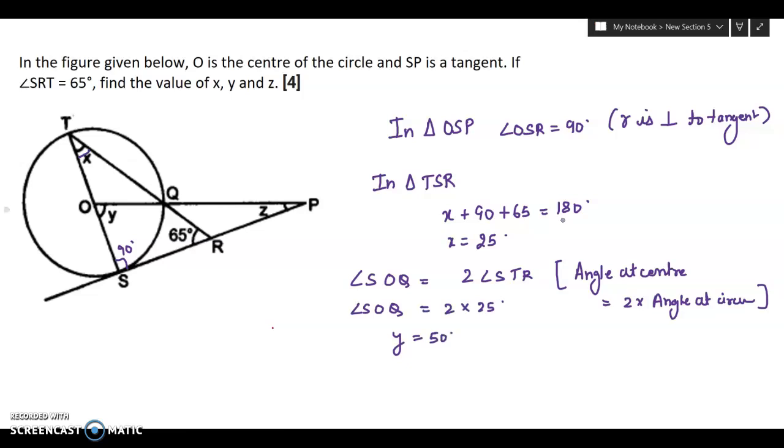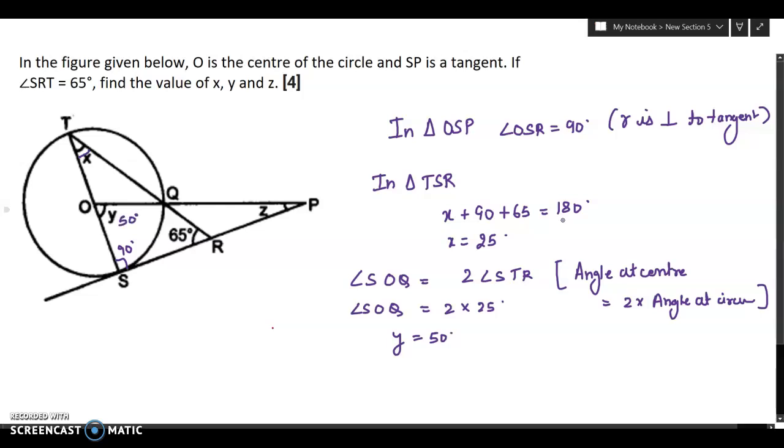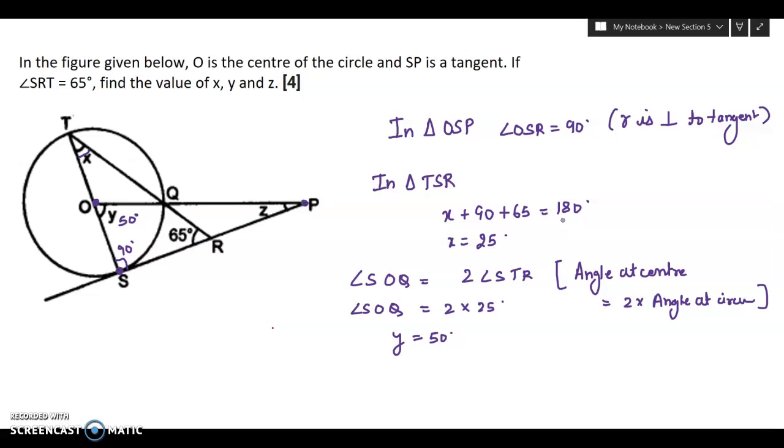Now in triangle OSP, we have 50 degrees here. For this angle, we have 90 degrees. And we have to find out z. Again, we will use the triangle property. In triangle OSP, 50 plus 90 plus z is equal to 180 degrees. So the value of z will be 40 degrees.